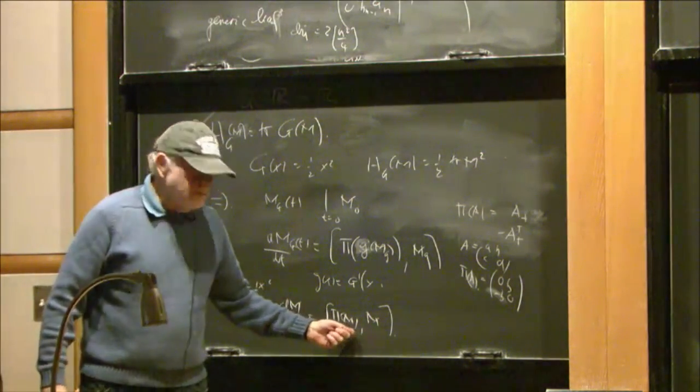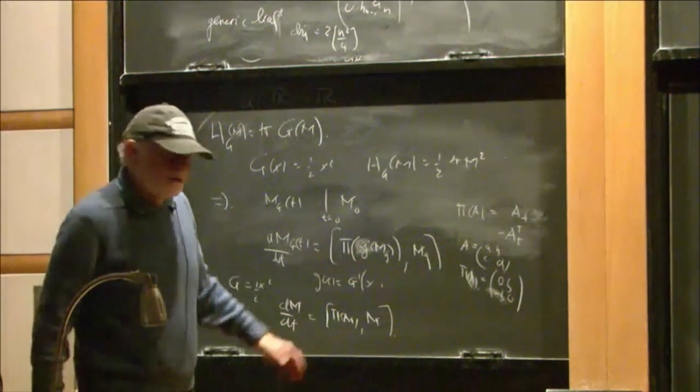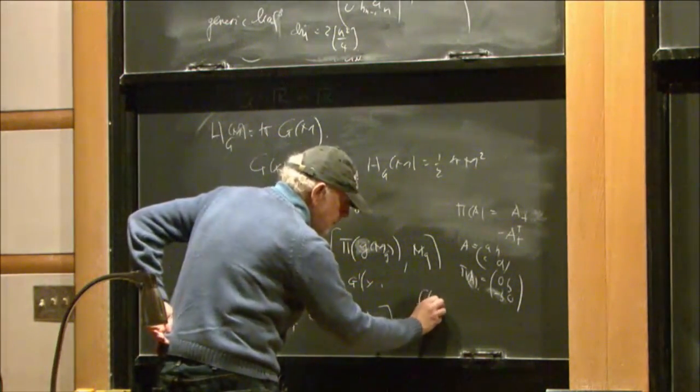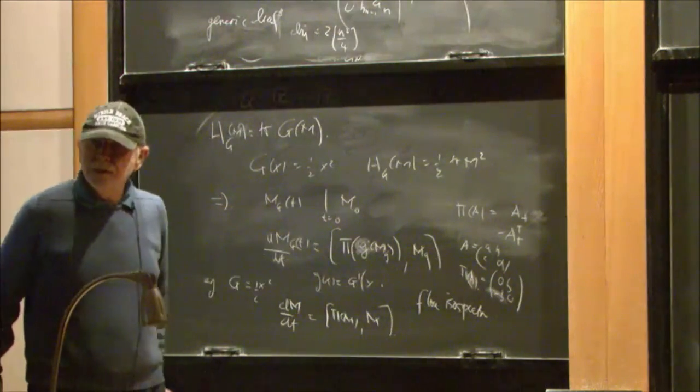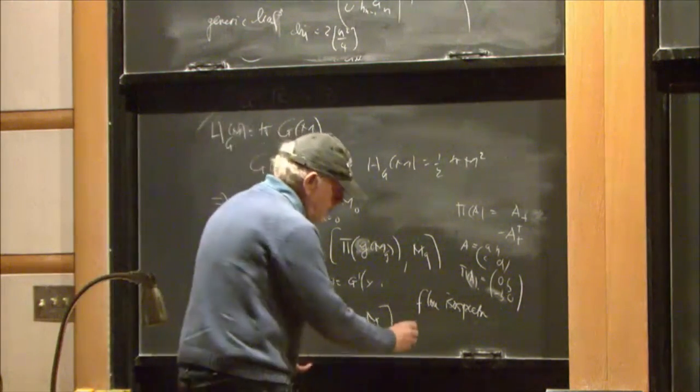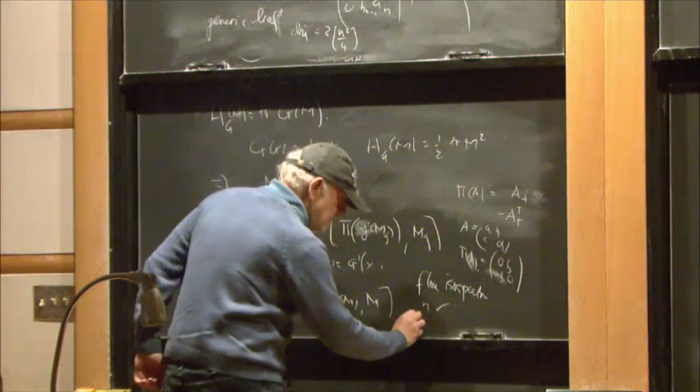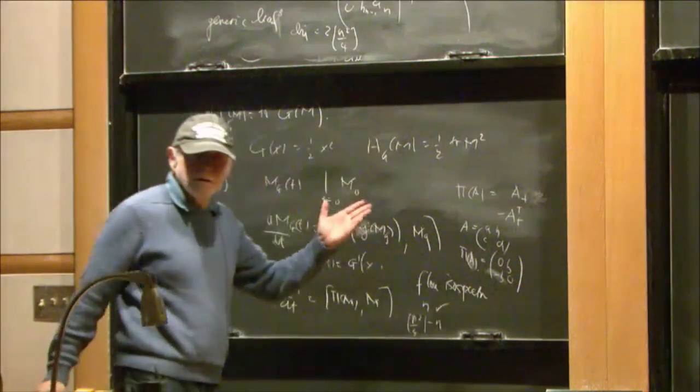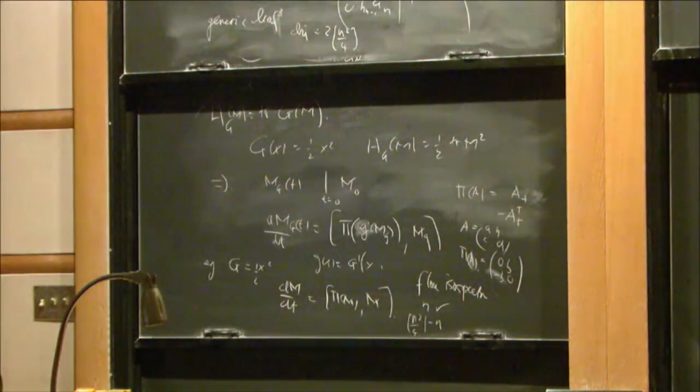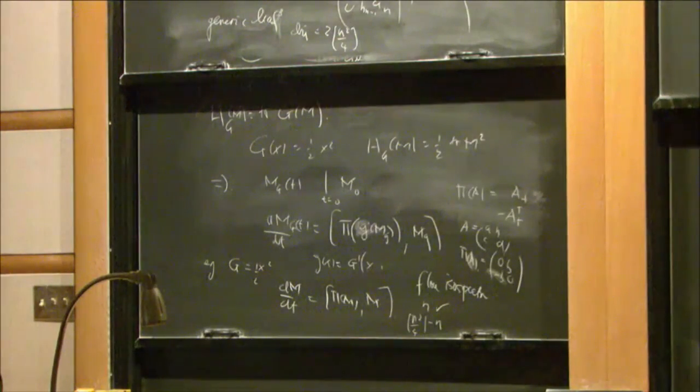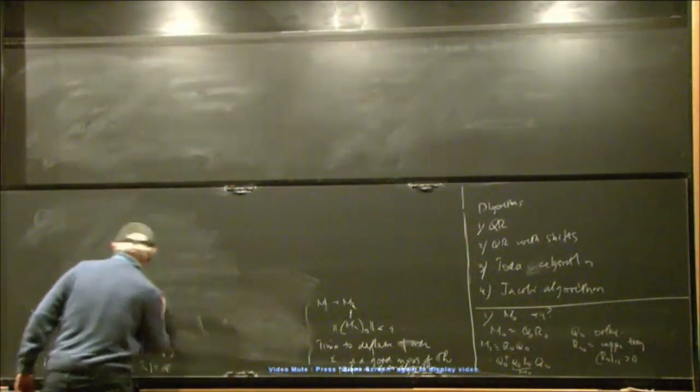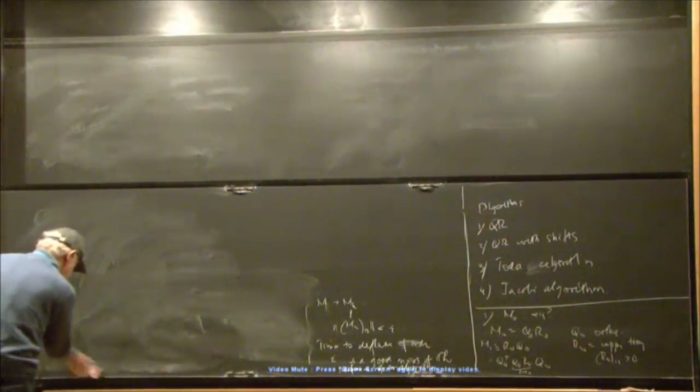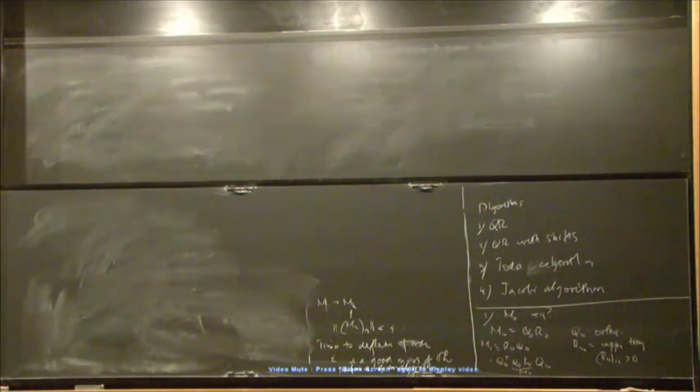Now, it's obvious from here because of the fact that you're looking at a commutator that the flow is isospectral. Any lax pair form tells you that the eigenvalues of the matrix are going to be conserved. So, that means you get N integrals. But you need, in general, N squared over 4 minus N additional integrals for this to be integrable. But this is a side issue. Now, these flows have really wonderful properties.